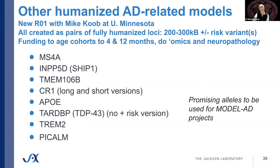Separately, we have a new R01 with Mike Kube. The goal is to create pairs of fully humanized loci — 203 kilobases — where each pair has the wild type as well as a risk variant. We at JAX will be funded to age cohorts to 12 months and do some omics and neuropathology. For example, MS4A is not a well-conserved locus between mouse and human. We'll humanize that locus and have the wild type humanized locus alongside the humanized locus with MS4A risk variants, then compare those two strains to each other to isolate what the risk variants are doing — otherwise you wouldn't know if differences were due to the risk variant or due to mouse versus human comparison. Promising models will then be added into combinations for future Model AD projects. These should be available in a year or two.